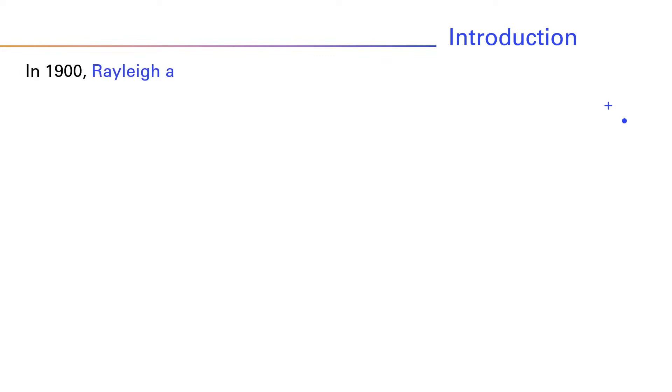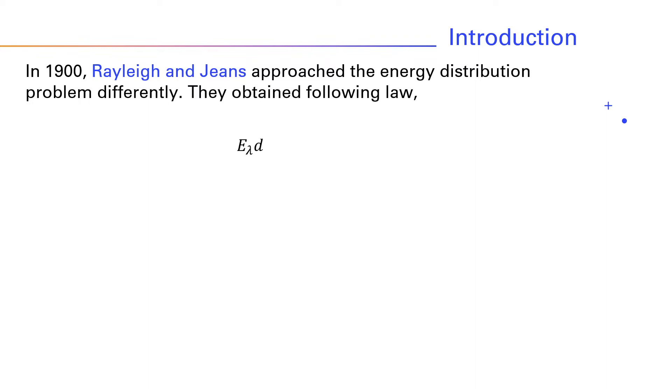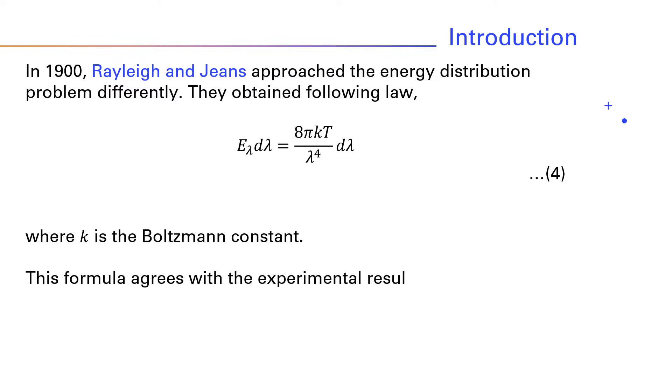In 1900, Rayleigh and Jeans approached the energy distribution problem differently. They obtained the following law: E_λ dλ = 8πKT/λ^4 dλ (equation 4), where K is the Boltzmann constant. This formula agrees with the experimental results in the long wavelength region.